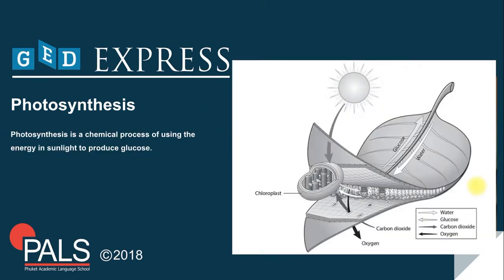Water is absorbed by the plants' roots and travels to the leaf cells. When light energy enters the cells, carbon dioxide and water react in structures called chloroplasts. The reaction produces glucose or sugar and oxygen. Glucose travels to the rest of the plant to be used or stored.